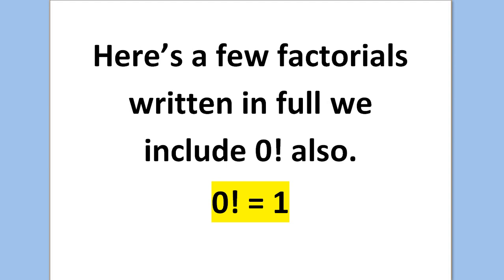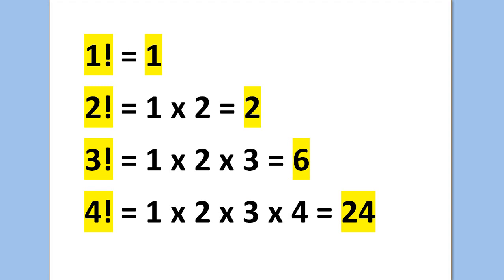Here are a few factorials written in full. We have included 0 factorial also. 0 factorial equals 1 — we will prove that later in the video. 1 factorial equals 1 also, and we'll prove that too. So those are the two special cases: 0 and 1 factorial. 2 factorial equals 2, 3 factorial equals 6, and 4 factorial equals 24.